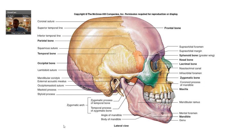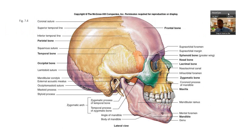Now let's get a frontal view. We'll see the nasal bone and the lacrimal bone. The lacrimal bone is kind of interesting — it's actually in the orbit. Going across the orbit: nasal, maxillary, then lacrimal, and then the ethmoid, which we haven't seen yet.